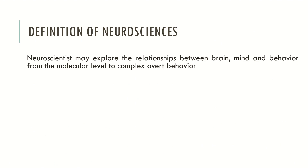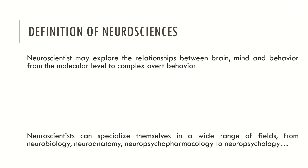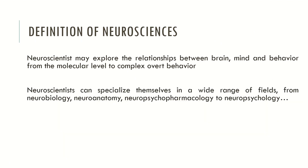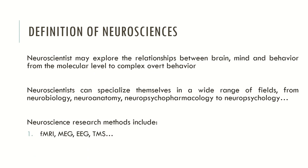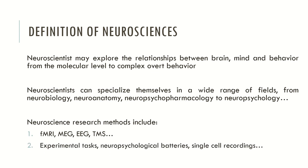Neuroscientists can specialize in a wide range of fields, from neurobiology and neuroanatomy to neuropsychopharmacology and neuropsychology. Neuroscience research methods may include fMRI, MEG, EEG or TMS, and may also include experimental tasks, neuropsychological batteries or single cell recordings. In the future, I will produce videos focused on these specific research methods.